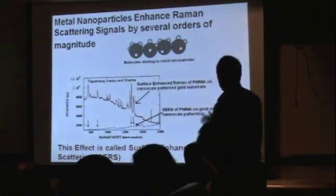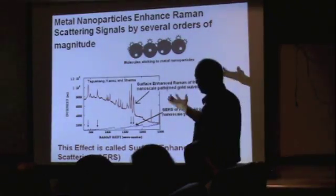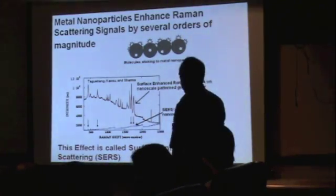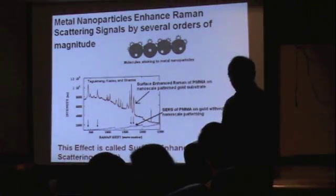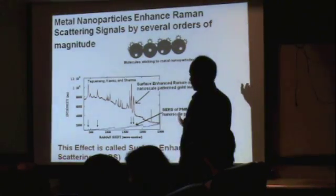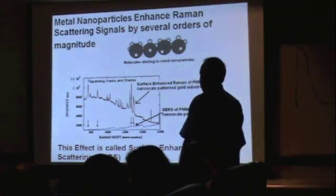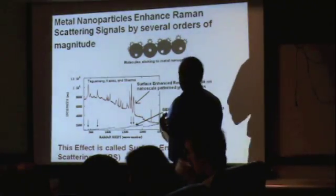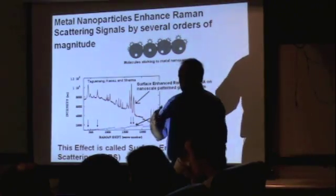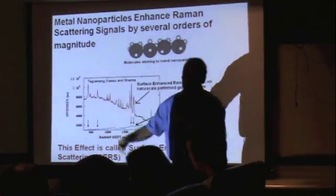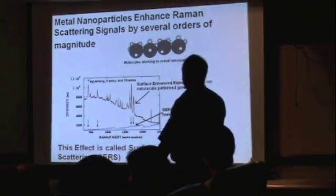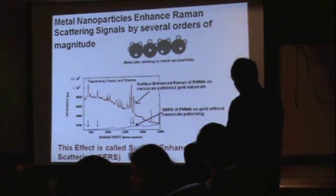This is the Raman spectrum of some molecule, BMMA. And these peaks that you see here, they are characteristic fingerprints of that molecule. Now, of course, this Raman spectrum is a very weak spectrum. It's very difficult to see. Typically, one photon out of a million gets converted into Raman photons. With a million photons shone upon a molecule, only one gets shifted. So it's a very inefficient process.